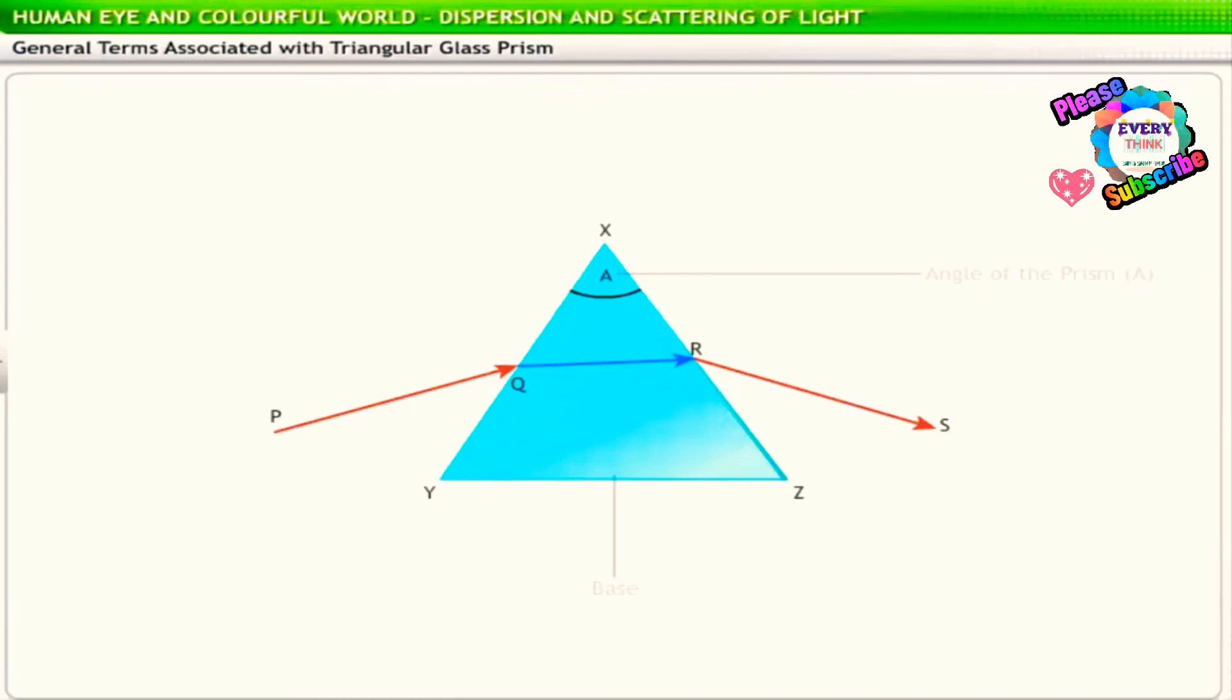Now, a quick recap of the terms associated with refraction. The ray of light that is incident on a surface is called an incident ray. Therefore, PQ is the incident ray. Q is the point of incidence.